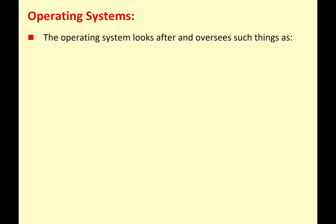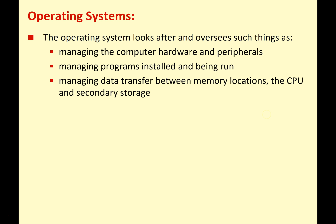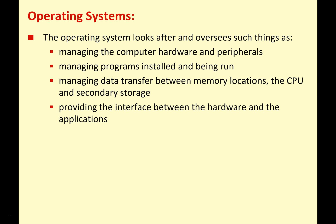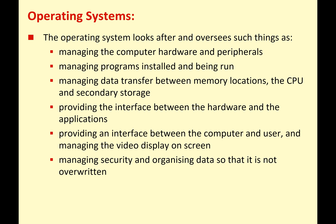So what do operating systems do? They look after and oversee managing the computer hardware and peripherals, managing programs installed and being run, managing data storage between memory locations — the CPU and secondary storage — providing an interface between the hardware, the applications, and the user, managing the video display on screen, managing security, and organizing data so that it's not overwritten. These are all key background tasks that aren't exciting, but without them nothing in a modern computer system would work. Even mobile devices like smartphones and tablets need quite a complicated operating system in order to run.